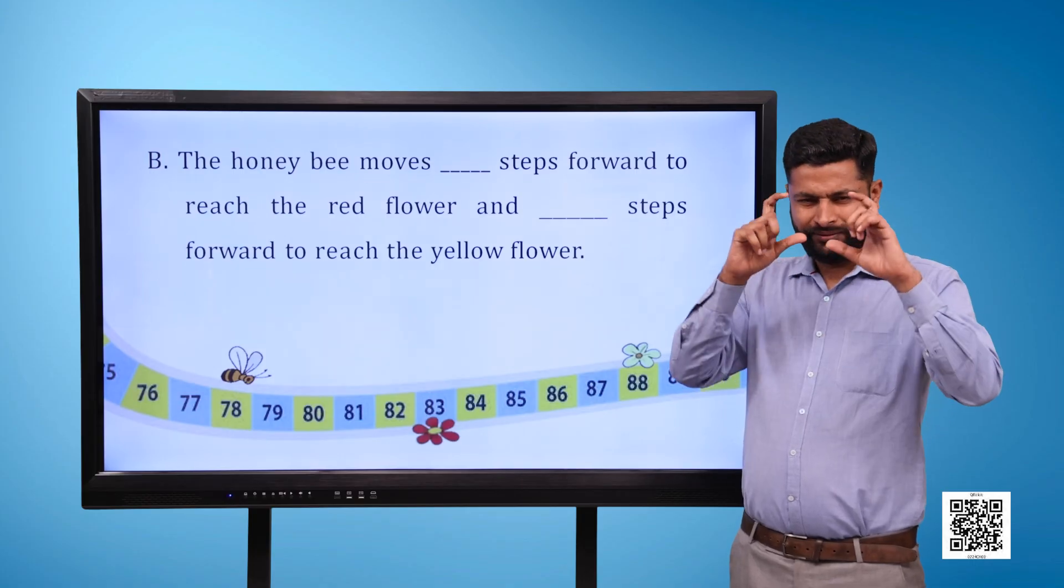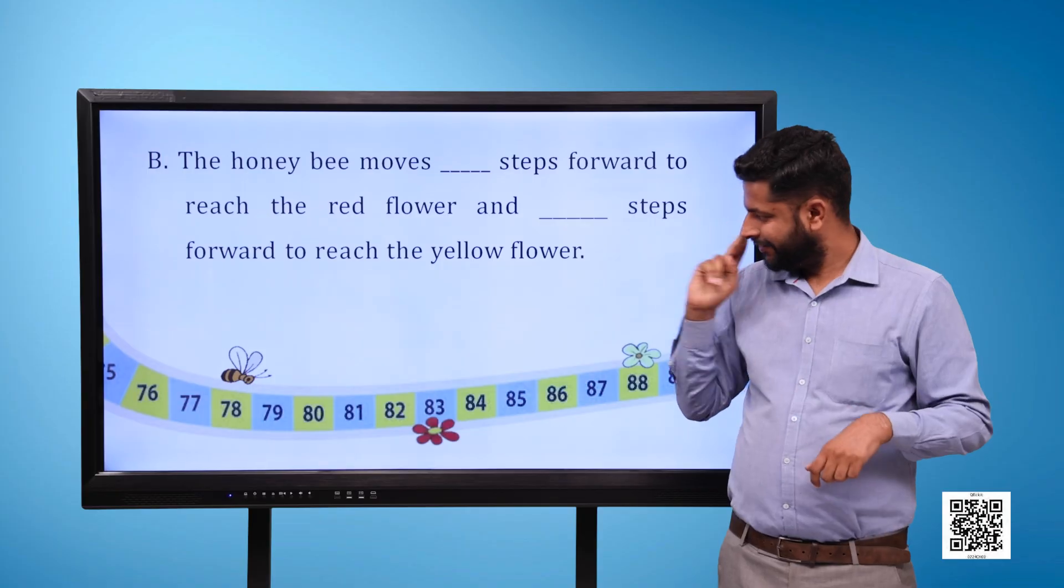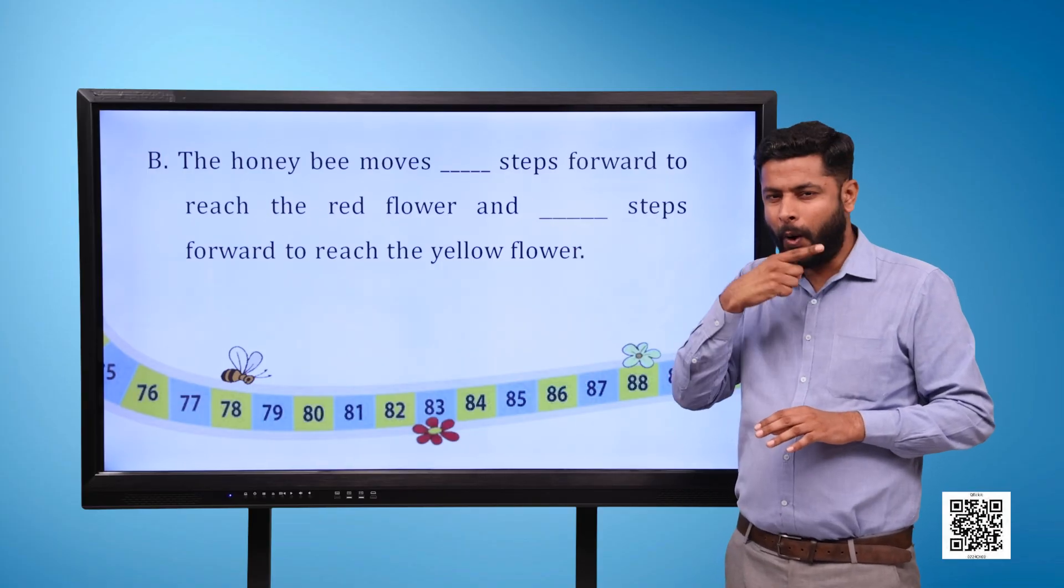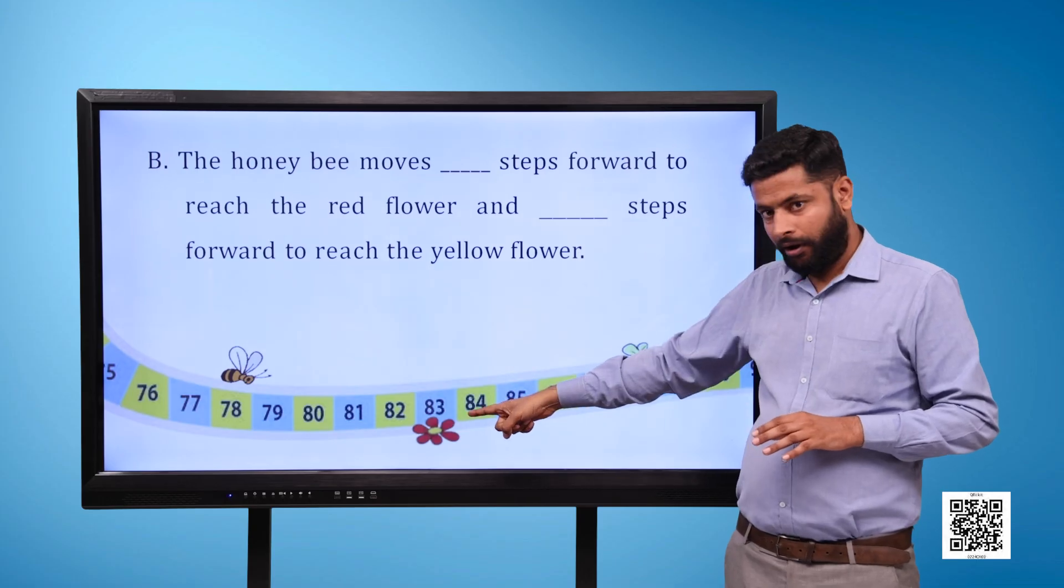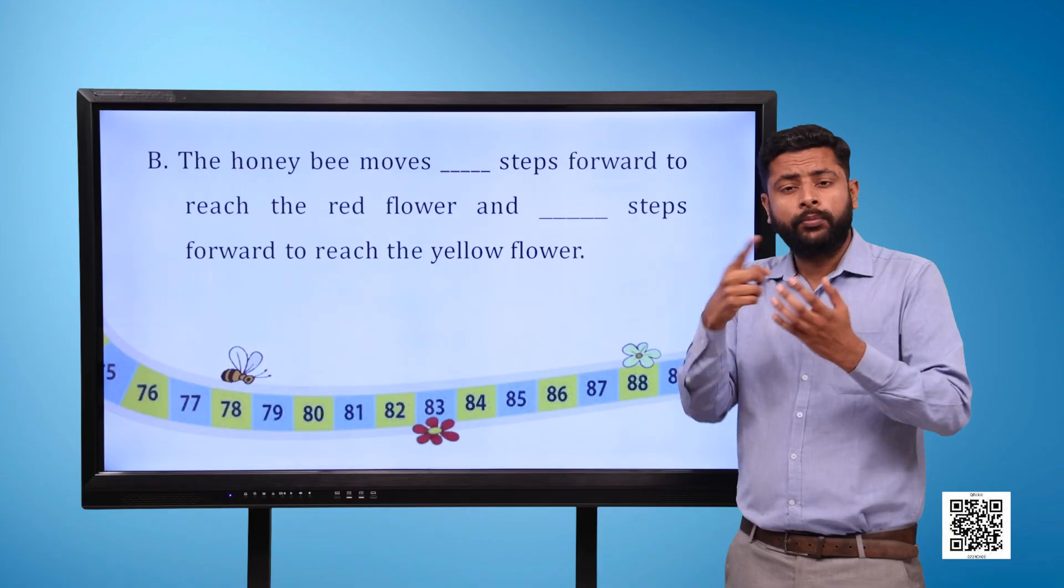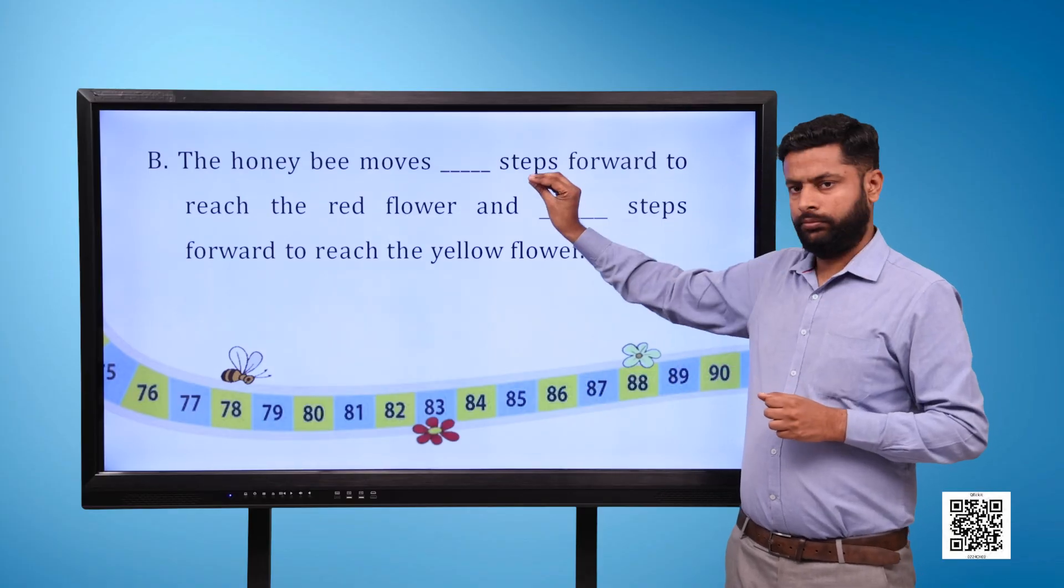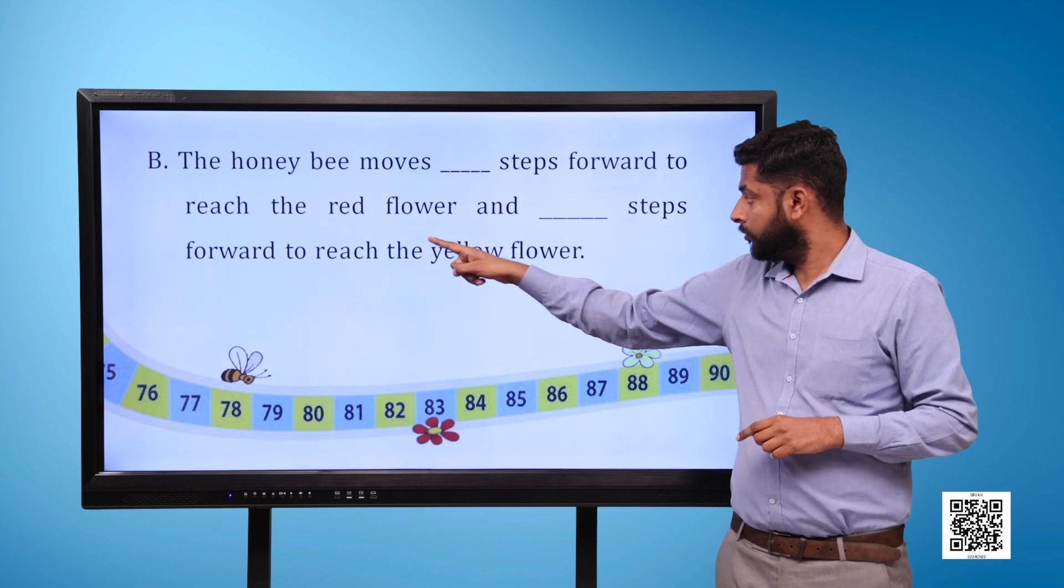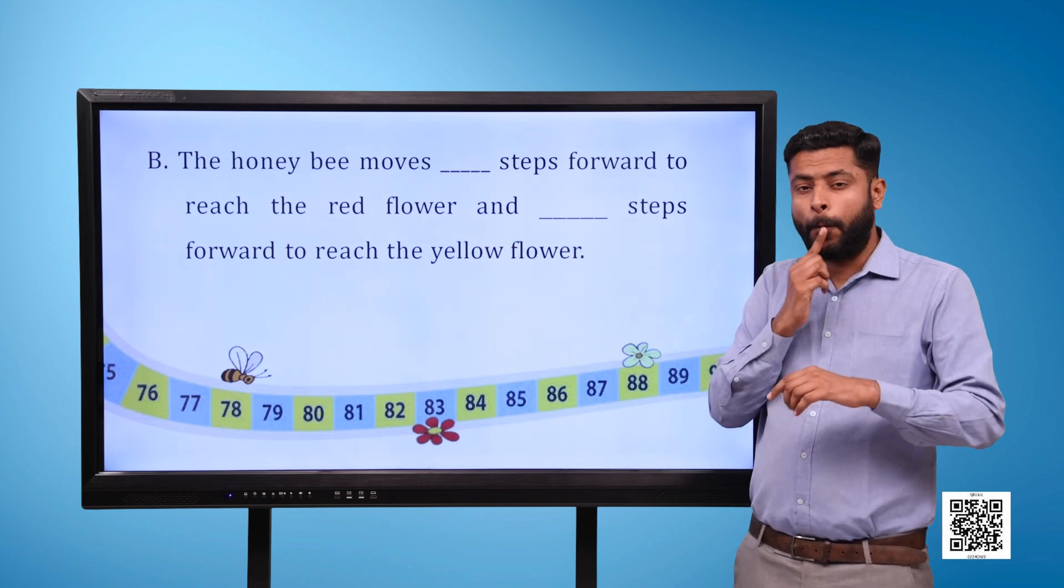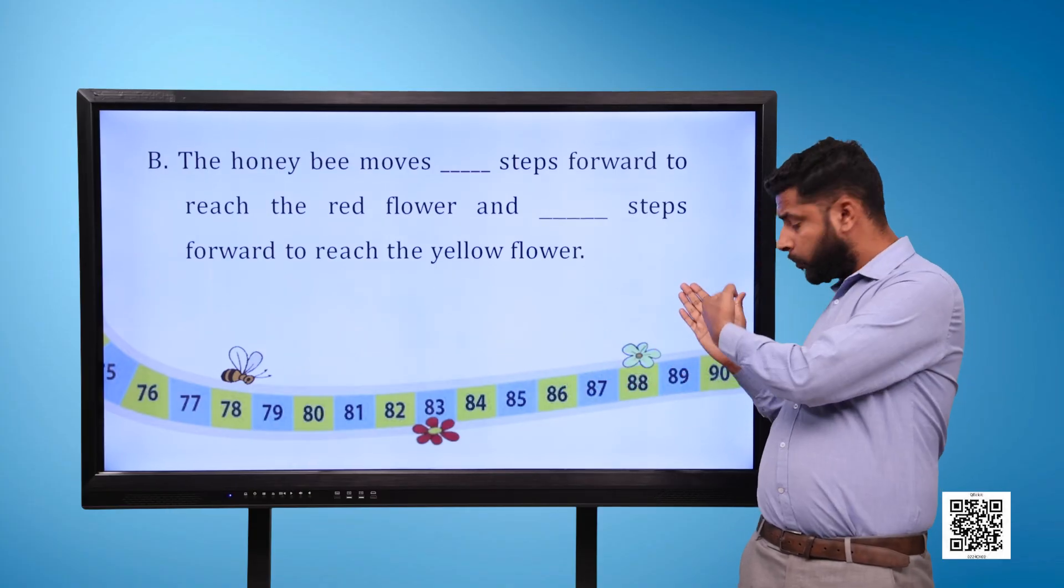The honeybee moves blank steps forward to reach the red flower and blank steps forward to reach the yellow flower.